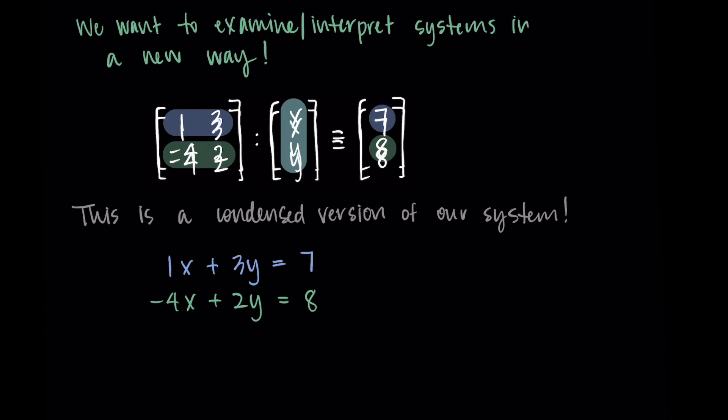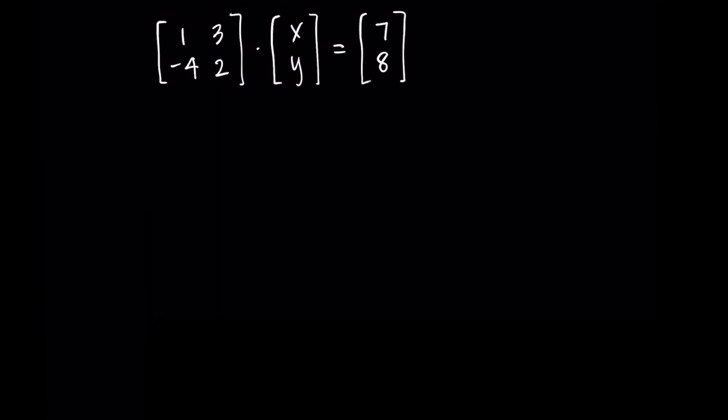So we can also think of this more formally in terms of column vectors. So that would look like our original system but instead of writing the numbers we can think of the first column as vector 1 and the second column as vector 2.